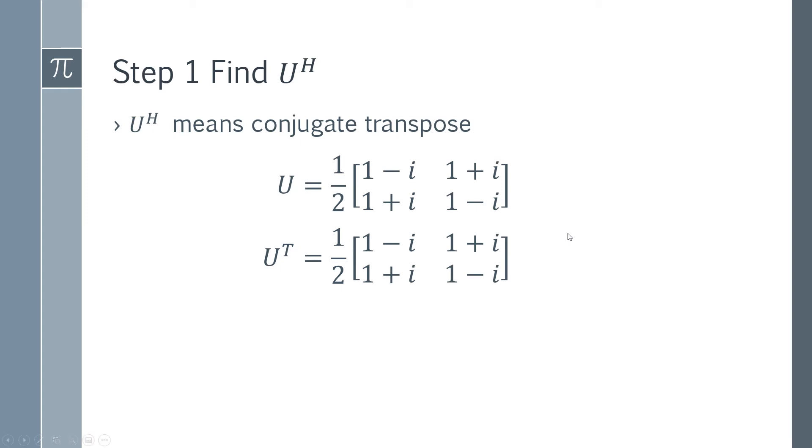The next step is to find the conjugate. And to do that, we just switch the sign on our imaginary part. So this minus is going to become plus, this plus is going to become minus, this plus is going to become minus, this minus is going to become plus. And so we just go through each one and individually change each of the signs.